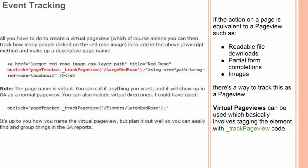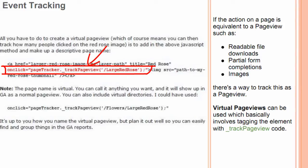If the action on a page is equivalent to a page view — such as readable file downloads, partial form completions, or images — there's a way to track this as a page view. Virtual page views can be used, which basically involves tagging the element with a track page view code.